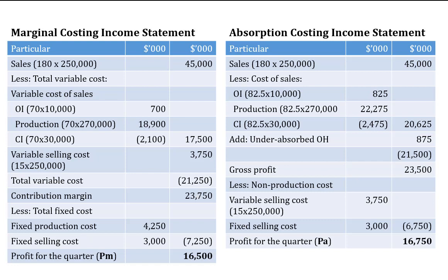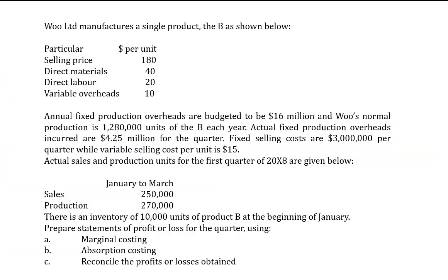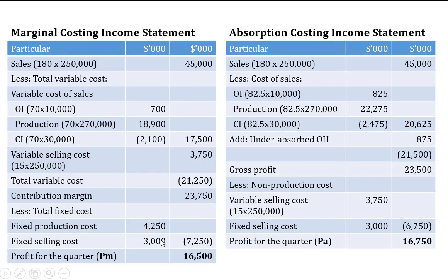After accounting for all variable costs, we are left with only fixed costs. From the question, fixed production cost for the quarter is $4.25 million and fixed selling cost is $3 million. We add these, subtract them from the contribution margin, and obtain a profit of $16,500 thousand for the quarter. That completes the marginal costing income statement: take sales, deduct all variable costs to get contribution, then subtract all fixed costs.